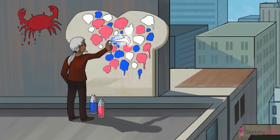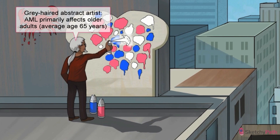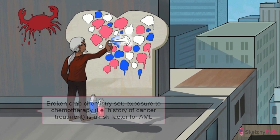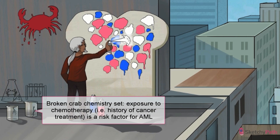Let's head back to the other rooftop and complete our picture of AML. AML primarily affects adults, with a median age of presentation of 65 years. Anything that causes damage to the DNA inside bone marrow cell precursors can increase the risk of malignant transformation to AML. This includes exposure to chemotherapy, which is usually designed to cause damage to DNA. As you might expect, the resulting neoplastic cells often have mutations, deletions, or translocations.